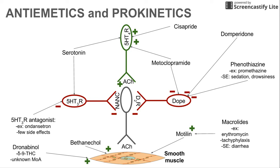Before we start talking about all the drugs listed here, let's talk about the neurons that innervate the smooth muscle. There is a neutral neuron that releases acetylcholine, which acts on the smooth muscle and causes smooth muscle contraction. That's going to be our stimulus for movement in the GI tract.